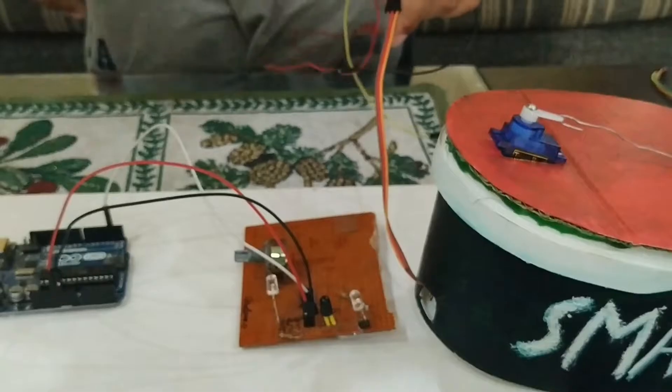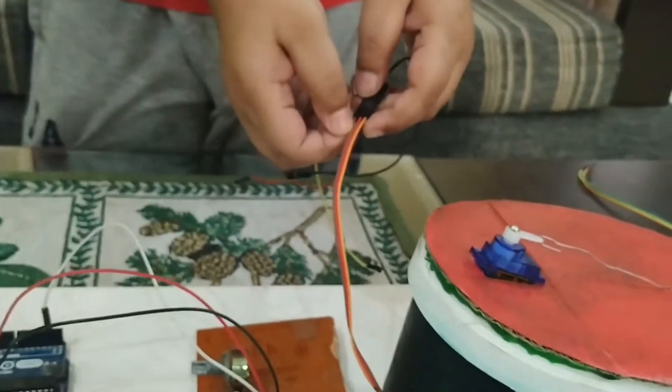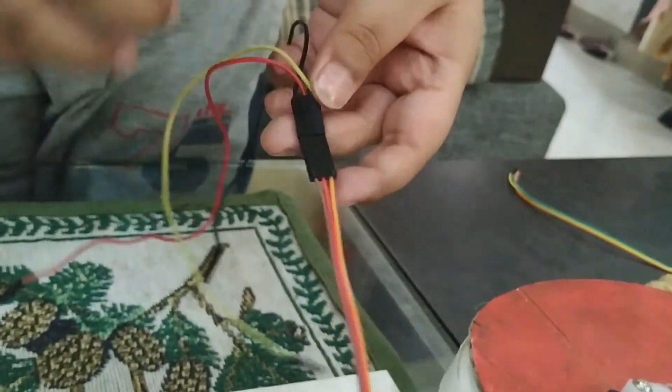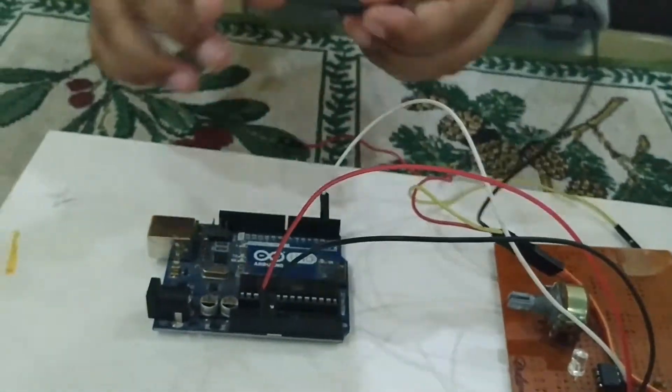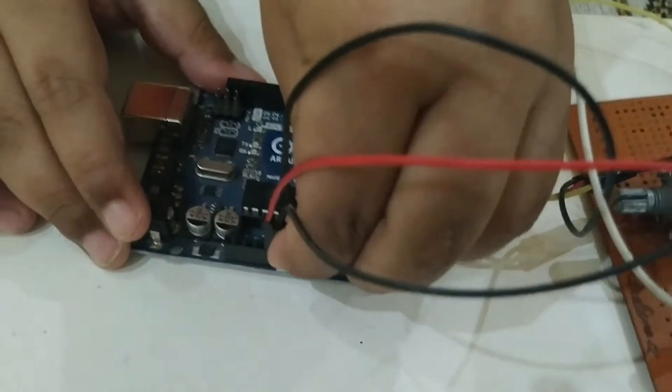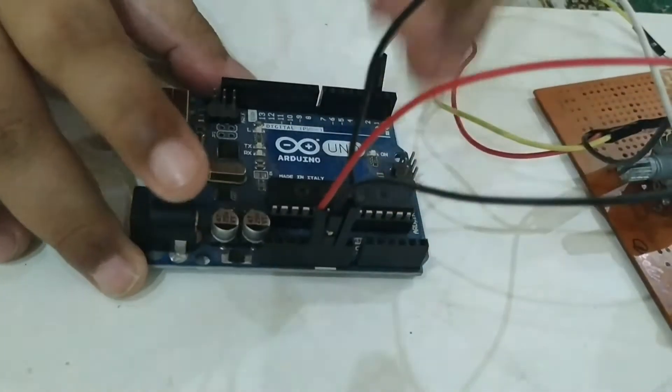Connect the ground wire of the servo to the GND pin of the Arduino. You can also use a breadboard.